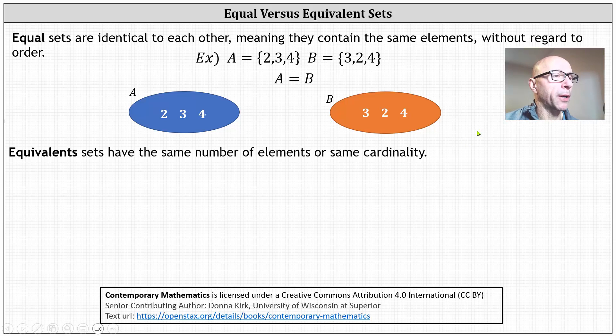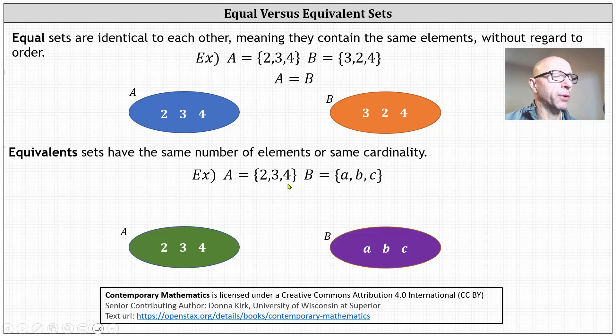So for example, if set A has the elements 2, 3, and 4, set B has the elements A, B, and C. Of course, the two sets are not equal because the elements in the sets are different. However,